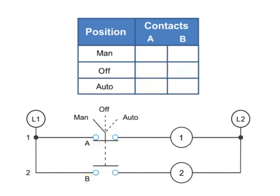In this illustration of a three-position selector switch, a third row is added to the truth table. So we now have a manual position, an OFF position, and an AUTO.